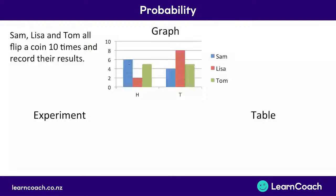You'll be able to read off the graph that Sam throws a head six times and tails four times, whereas Lisa throws tails eight times and heads only two times. Tom is five of each.